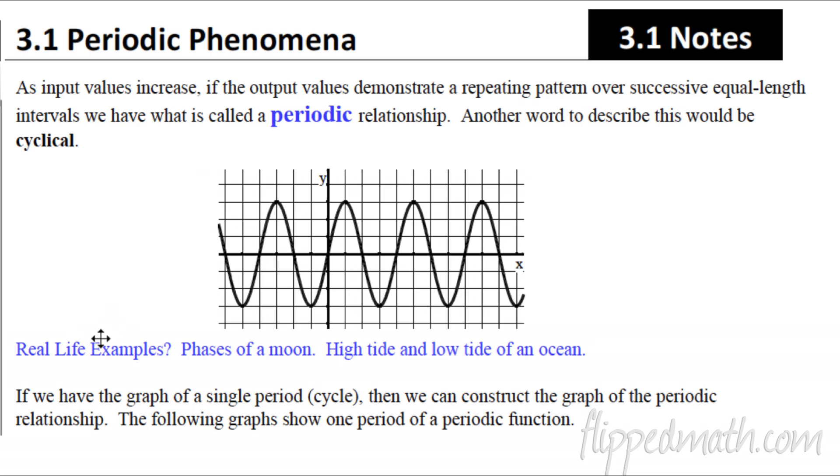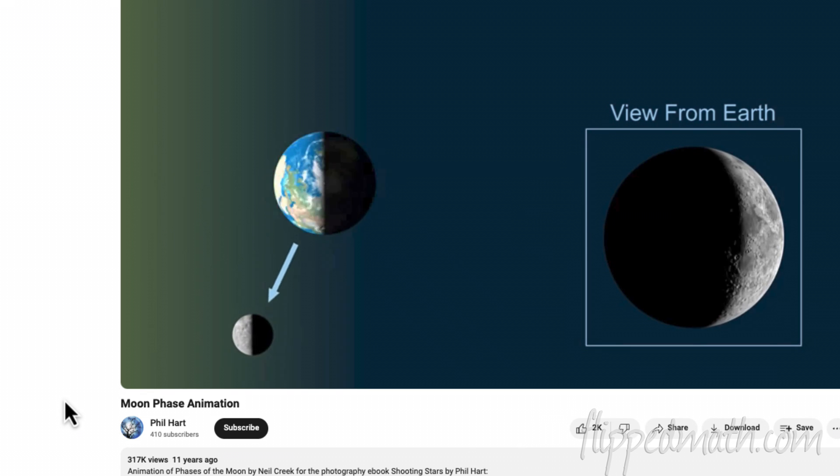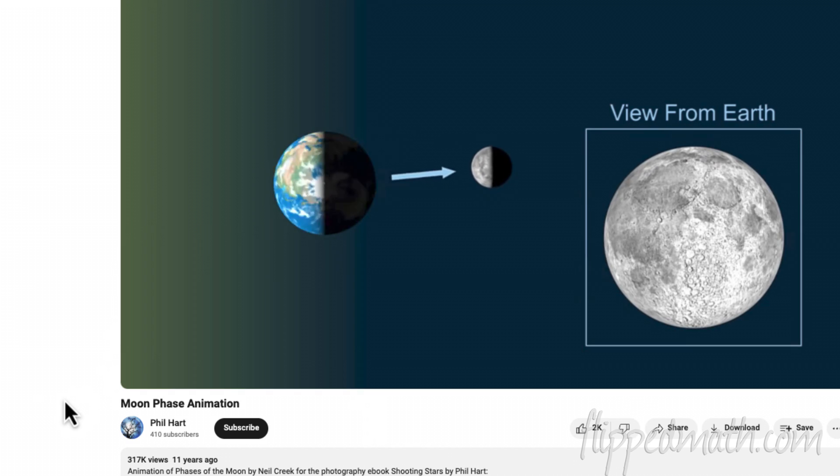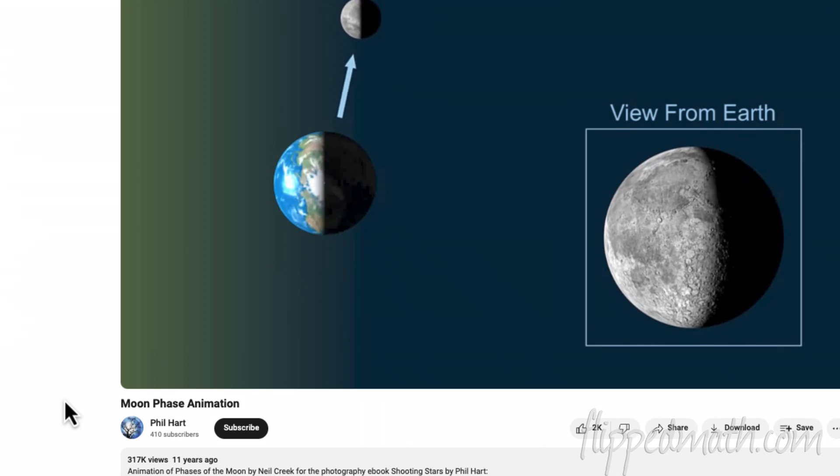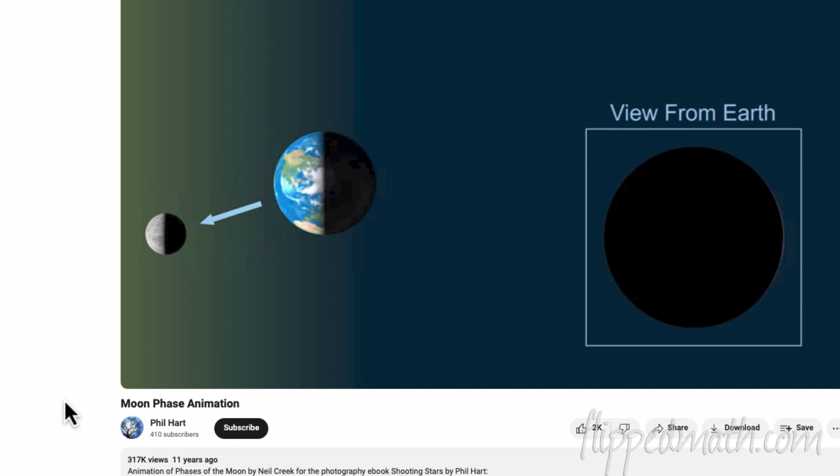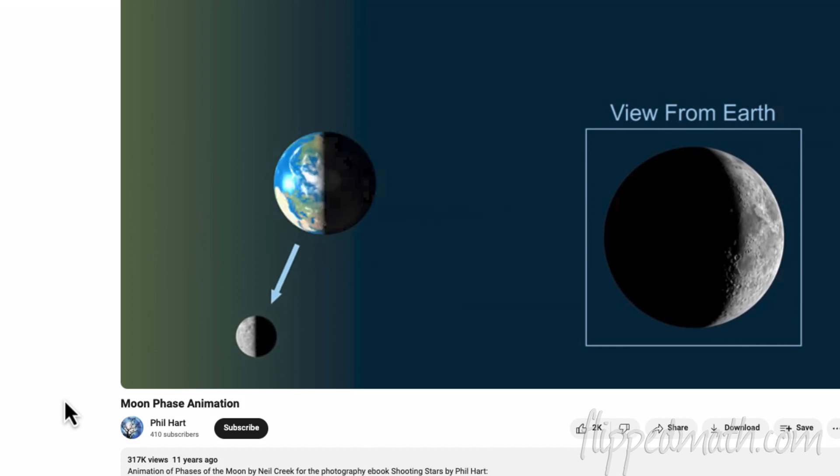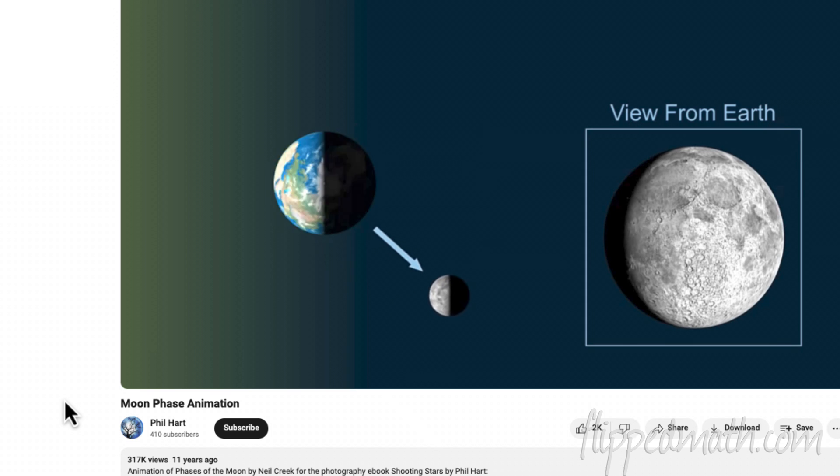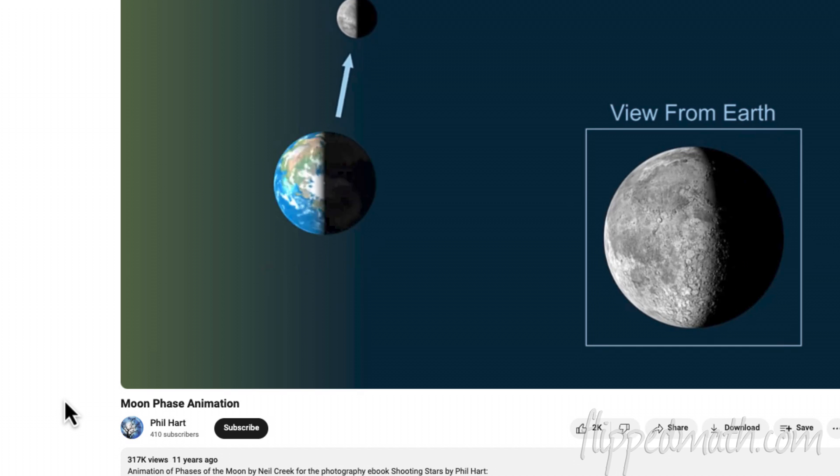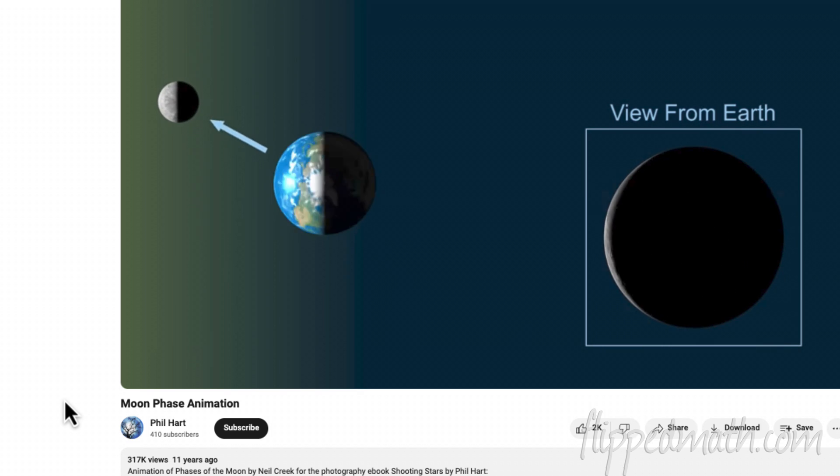Real life examples of this: phases of the moon, high tide and low tide of the ocean. I actually want to show you an amazing animation that was created about the moon. In this animation, the sun is all the way to the left shining on the earth and the moon. And on the right here, you can see the view of the moon from the earth. I'm going to have this go around two times. This is by Phil Hart on YouTube. Give him a shout out. We start right there where there's no light, and then as the moon travels around the earth, the illumination increases and then decreases again.